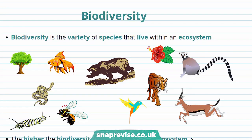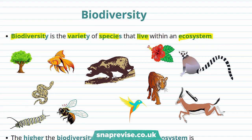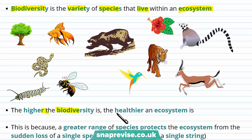Biodiversity is a really important topic. The future of the human species on Earth relies on us maintaining a good level of biodiversity. So what is biodiversity? Biodiversity is a variety of different species that live within an ecosystem. The higher the biodiversity is, the healthier an ecosystem is.